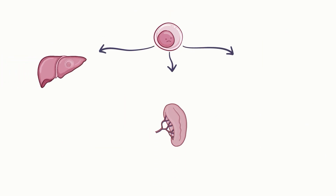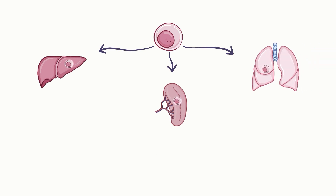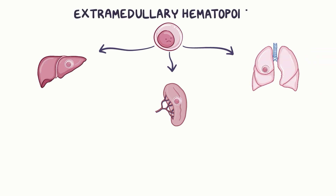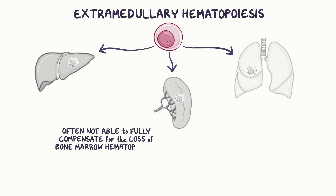In response, the hematopoietic cells migrate to the liver, spleen, and lungs, a process called extramedullary hematopoiesis. These tissues enlarge and sometimes become dysfunctional. The extramedullary hematopoiesis is often not able to fully compensate for the loss of bone marrow hematopoiesis, and it can lead to a shortage of all blood cell lines, called pancytopenia.